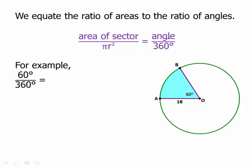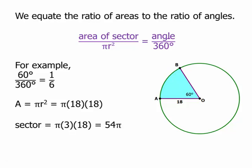For example, if we're given a 60-degree angle, then 60 over 360 is obviously one-sixth — we're dealing with one-sixth of the circle. The area of the whole circle is πr², which we can write as π times 18 times 18. I'm not going to multiply that out; I'll just take one-sixth of it. Dividing one of those 18s by 6 gives 3, so I just multiply 3 times 18, which is 54. That gives an area of the sector of 54π.